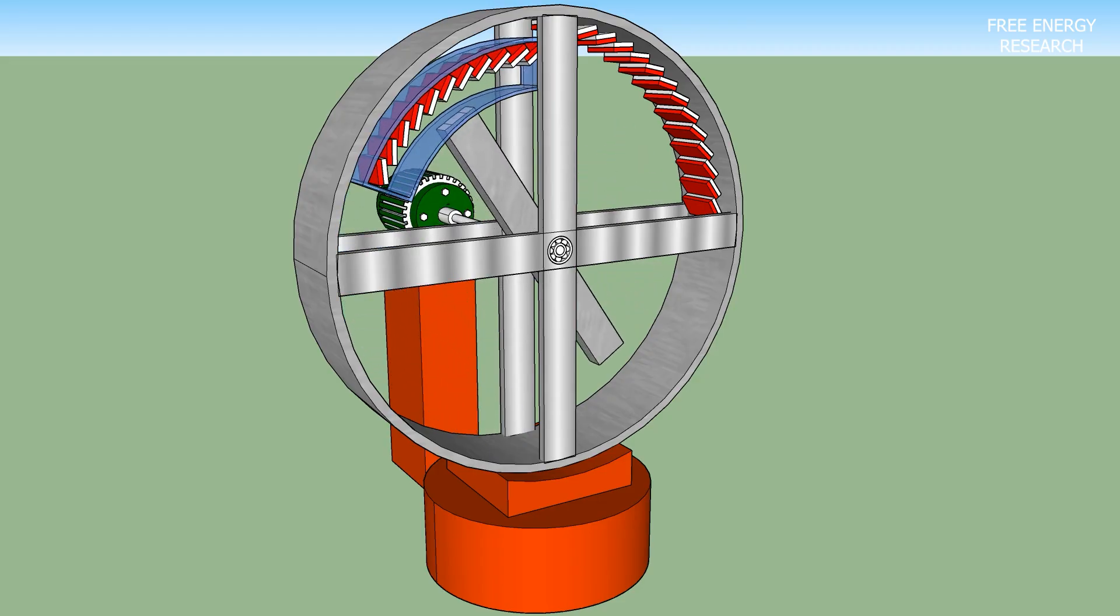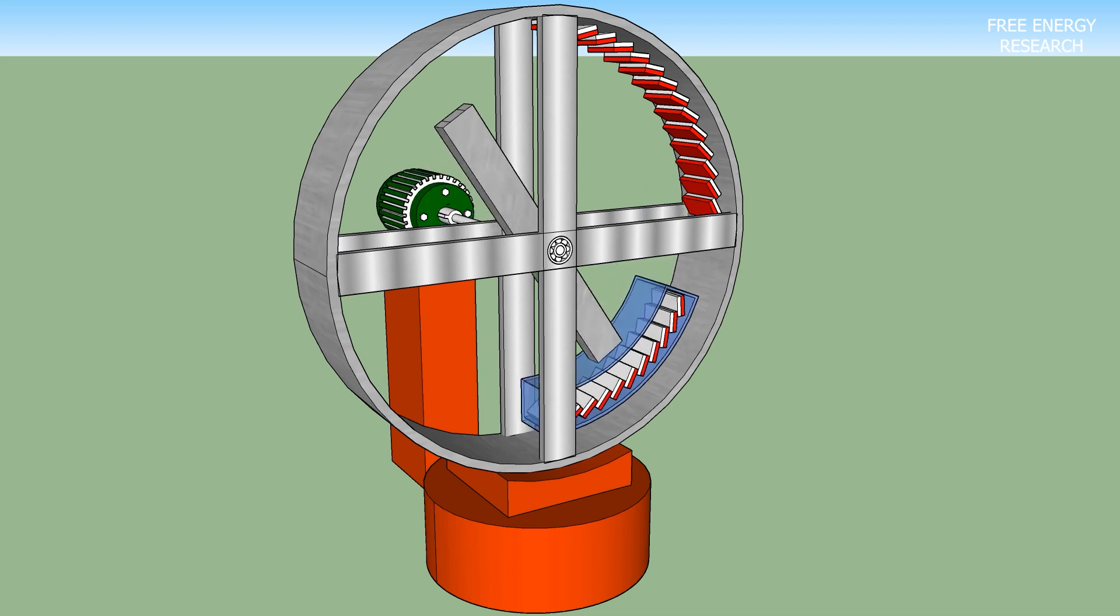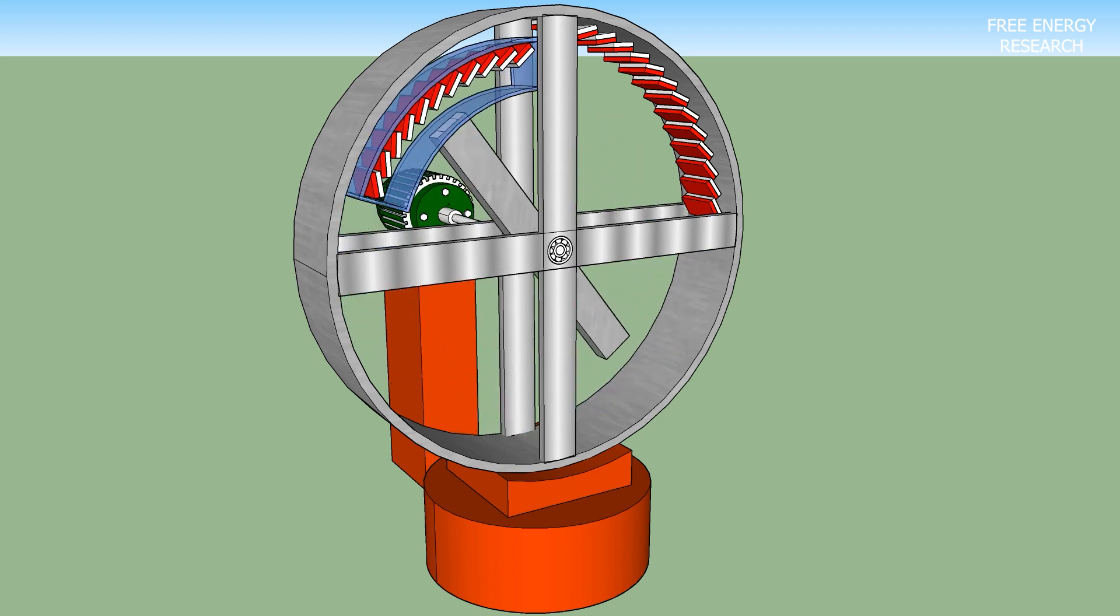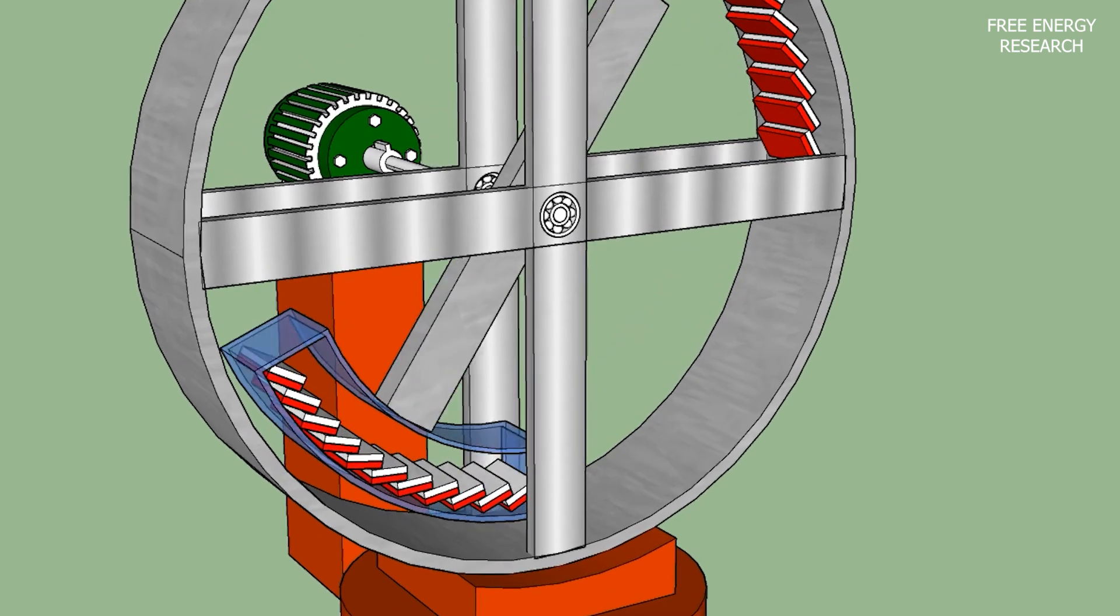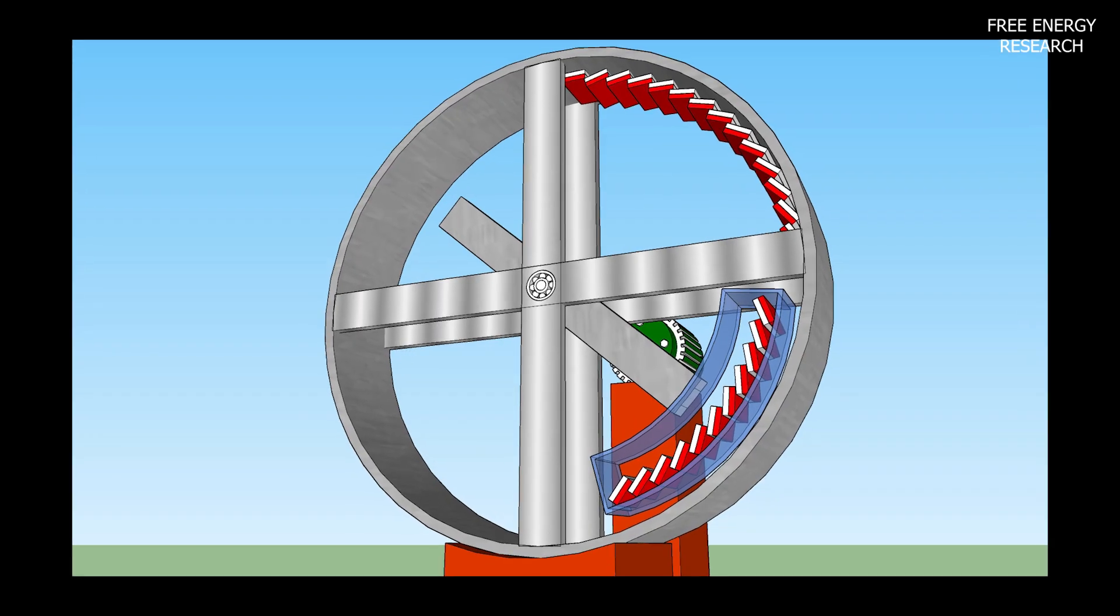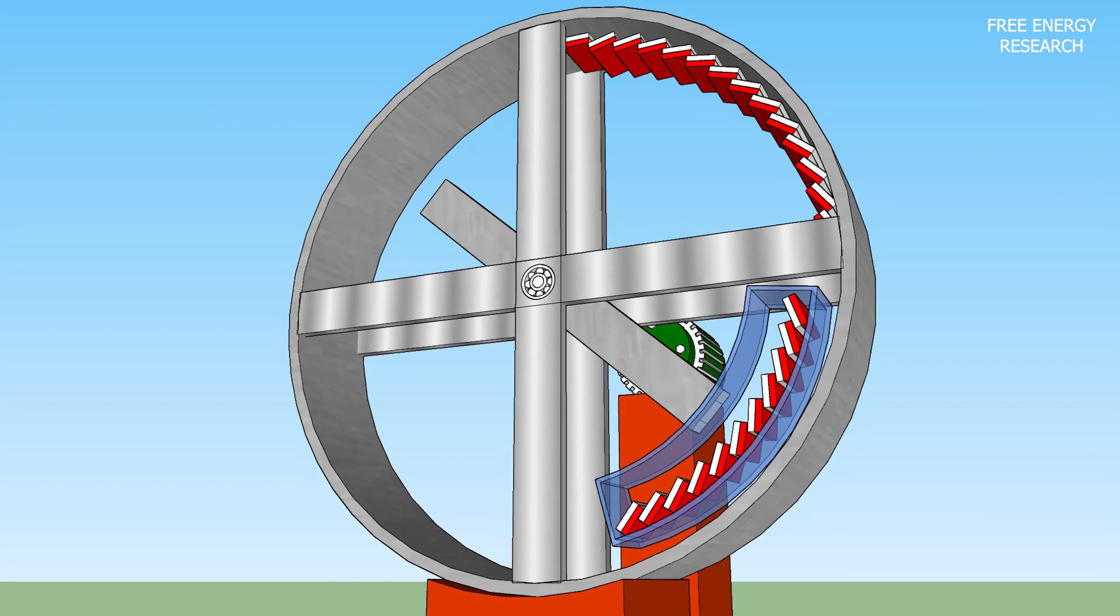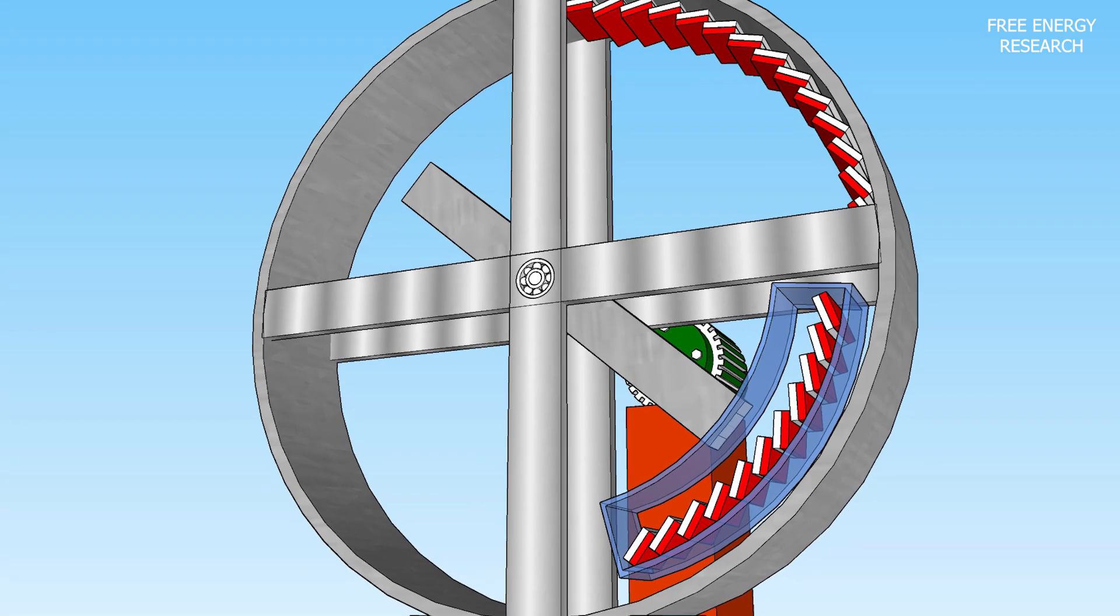Extending from the generator shaft is an arm, a pivotal element in the system. This arm features a substantial hammerhead, adding weight to the equation. Attached to this hammerhead is a magnet with a polarity strategically aligned with the magnets on the circular frame.